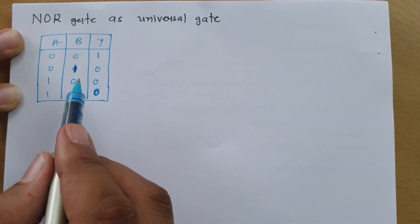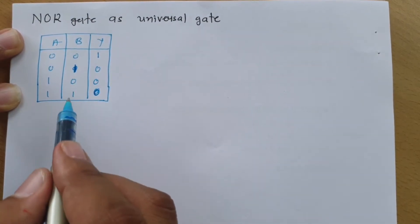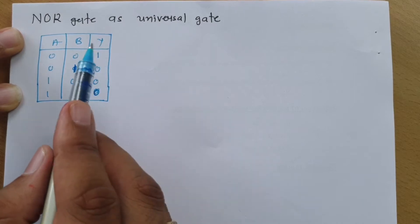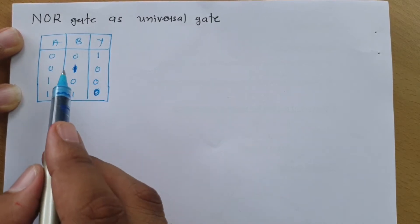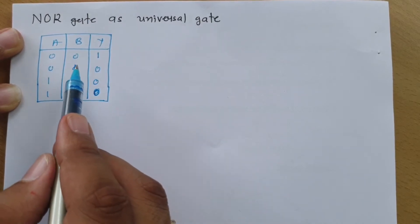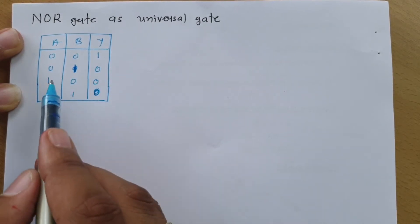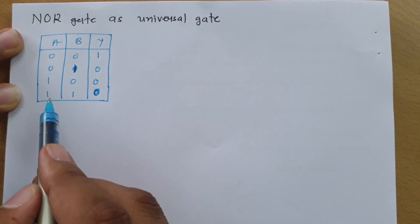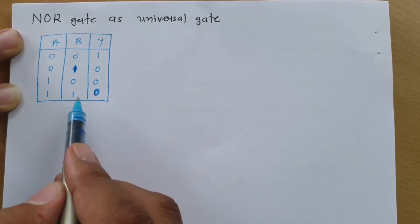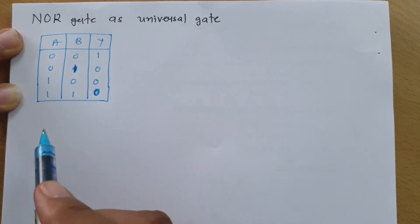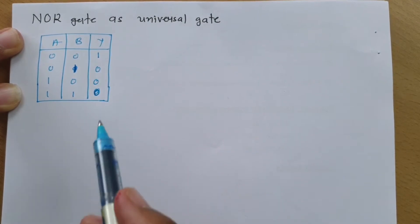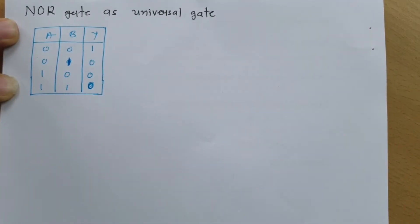NOR gate behavior: if any input is 1, then the output is 0. As per that, this truth table is defined. You can see here one input is 1 so output is 0, here one input is 1 so output is 0, and here both inputs are 1 so output is 0. That is how the truth table of NOR gate works.